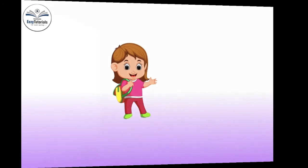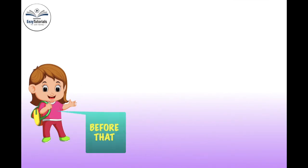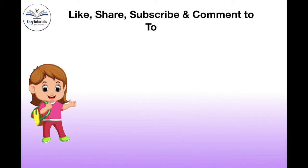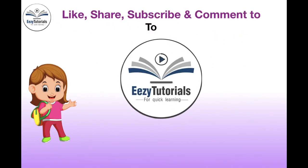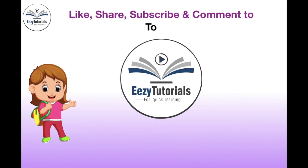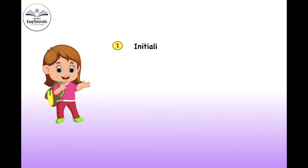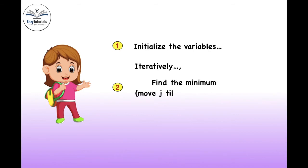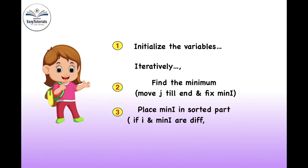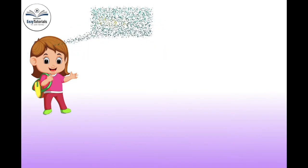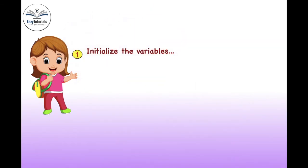Let us code this now. Before that, a kind request — kindly like, share, subscribe and comment to our channel Easy Tutorials. Let us start coding with 3 simple steps. Step 1: initialize the variables — we need an array, index I, J, minimum index, and a temporary variable. Step 2: iteratively find the minimum value.